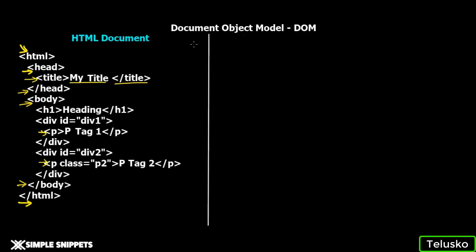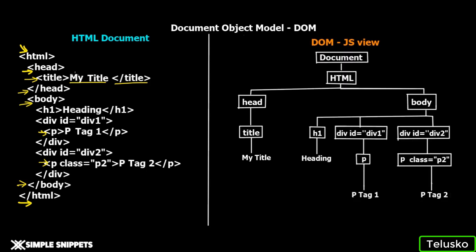Coming back to the original question: how does JavaScript understand this HTML document? This is where the Document Object Model comes into picture. When the HTML document is loaded in the browser, another representation of that document is created, known as the Document Object Model, or DOM. Each of these tags — HTML, head, title — are correspondingly represented as objects in the DOM. Hence the name 'object model'. Since this is an HTML document loaded onto the browser, that's why it's called 'document', and each tag is represented as an object.